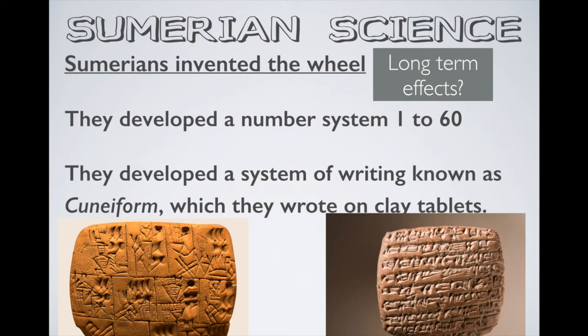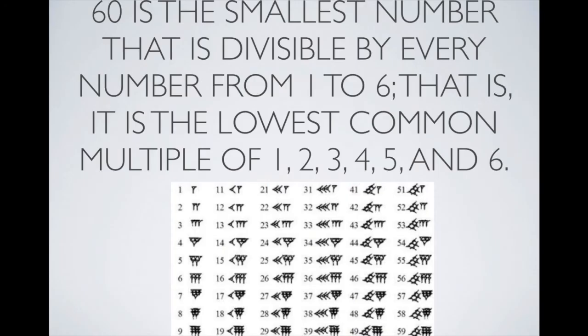When it came to science, the Sumerians invented the wheel, which has had incredibly positive long-term effects — we still use it today in bicycles and cars. They also developed a number system from one to sixty, and they developed one of the earliest known writing systems, known as cuneiform. Here is their numbering system — as you can see, it goes from one to sixty.